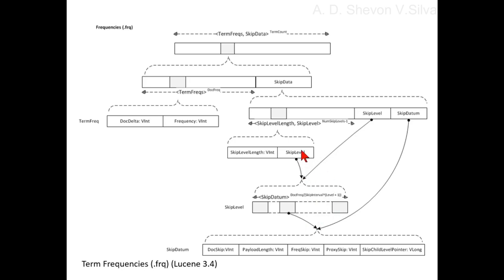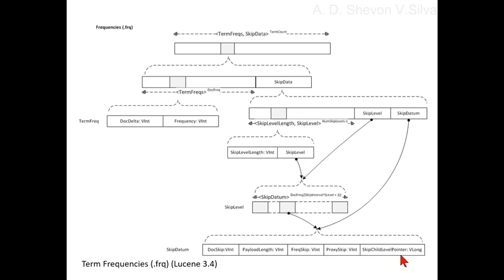Here the skip level is connected, and the skip datum consists of: doc skip vint, payload length vint, freq skip vint, proxy skip vint, and skip child level pointer vlong. Here it is connected to the skip data.